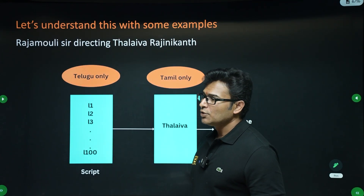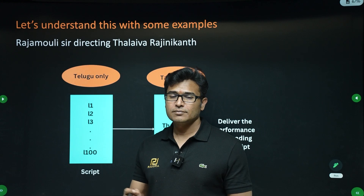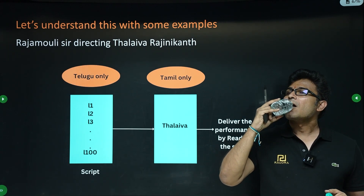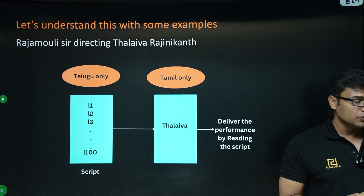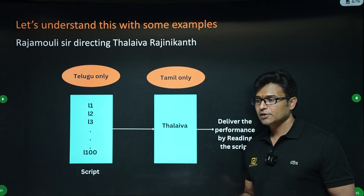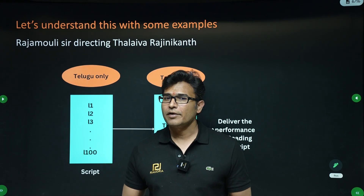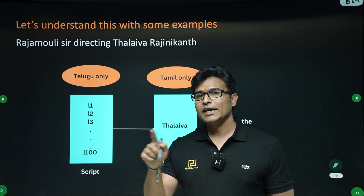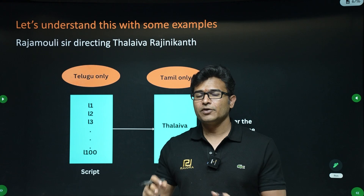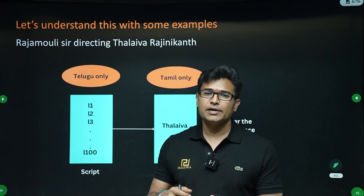I have given you an analogy to understand this. Let's say a director who knows only Telugu wants to direct Rajinikanth, who knows only Hindi — some translation is required. The Telugu script should be converted into Tamil so that Rajinikanth can understand it. There are two ways: one is you take the entire script, convert it into Tamil and give it to Rajinikanth — that is called compilation. Or you can go step by step, giving one Telugu line at a time converted into Tamil — that is called interpretation.